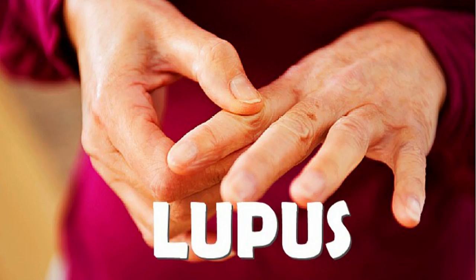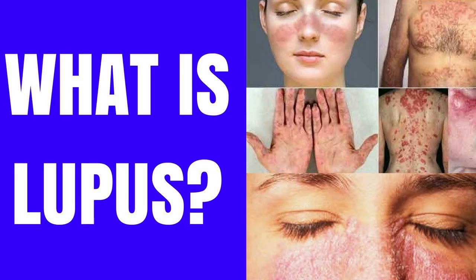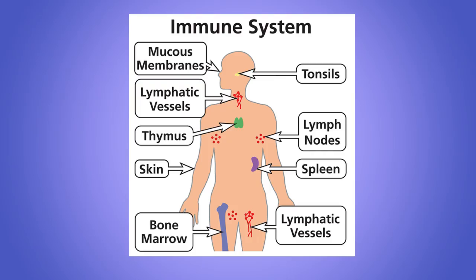But what is lupus? Lupus is an autoimmune disease that affects the whole body. But what does autoimmune disease mean? It means that the body's immune system — the system that is responsible for killing cancer cells and fighting off infections — turns against the body and starts to attack it and destroy it.